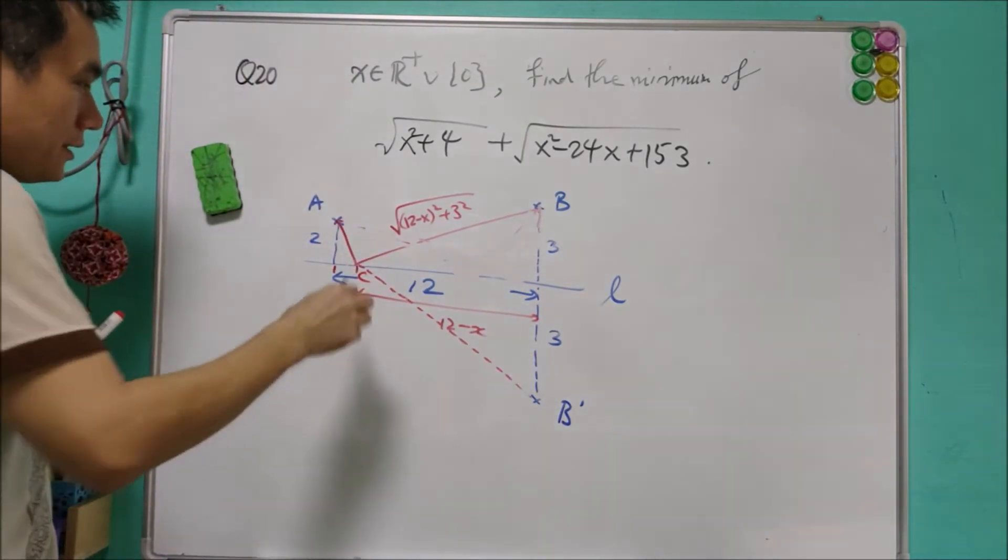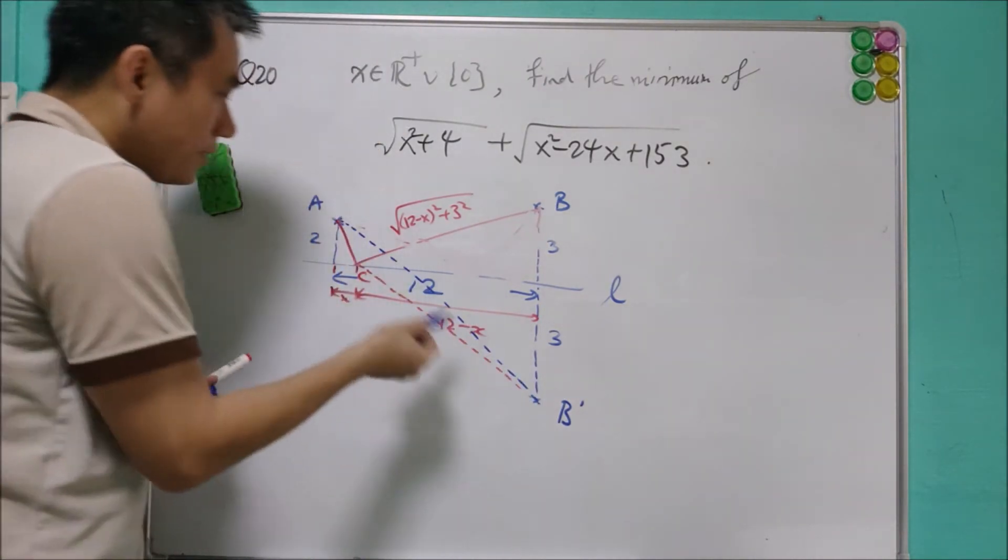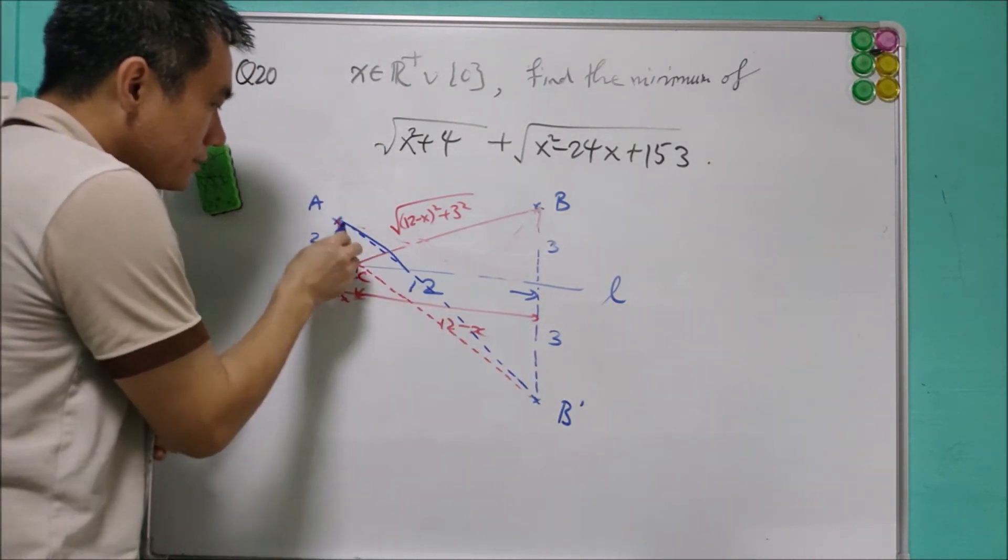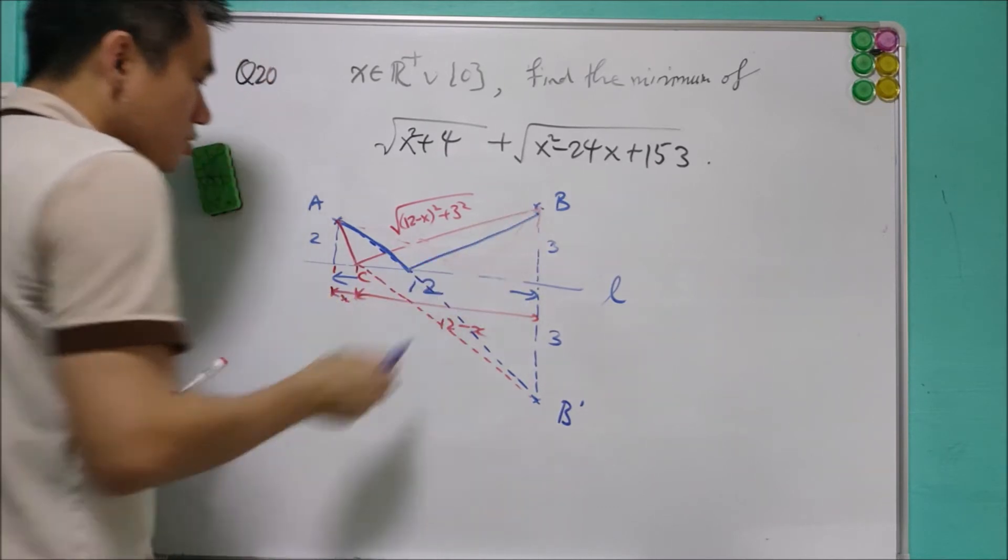And therefore, it is just this line. After you reflect it, this is the line that makes the shorter distance.